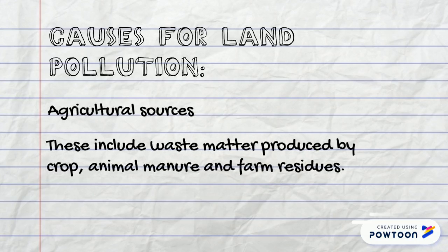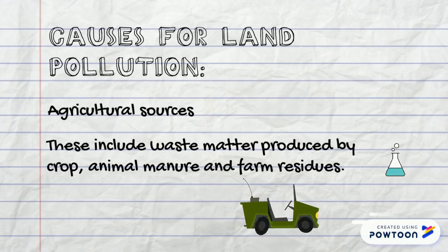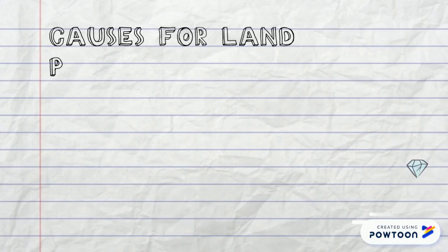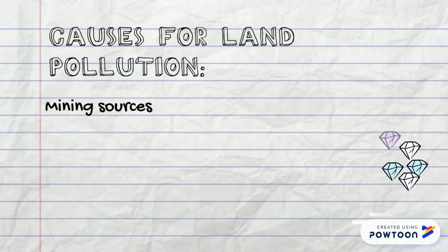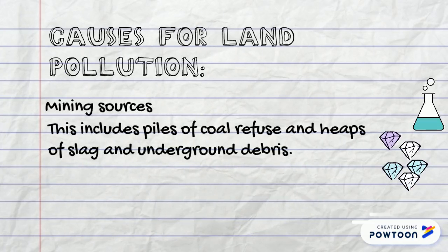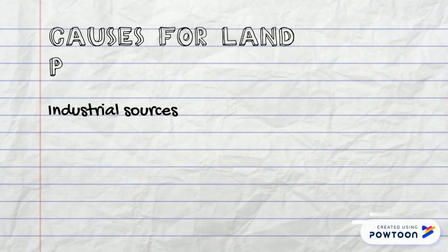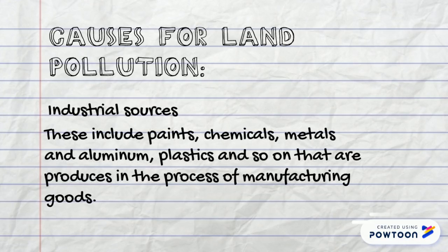Causes of land pollution. First is agricultural sources — this includes waste matter produced by crops, animal manure, and farm residues. Second is mining sources — this includes piles of coal refuse, heaps of slag, and underground debris.